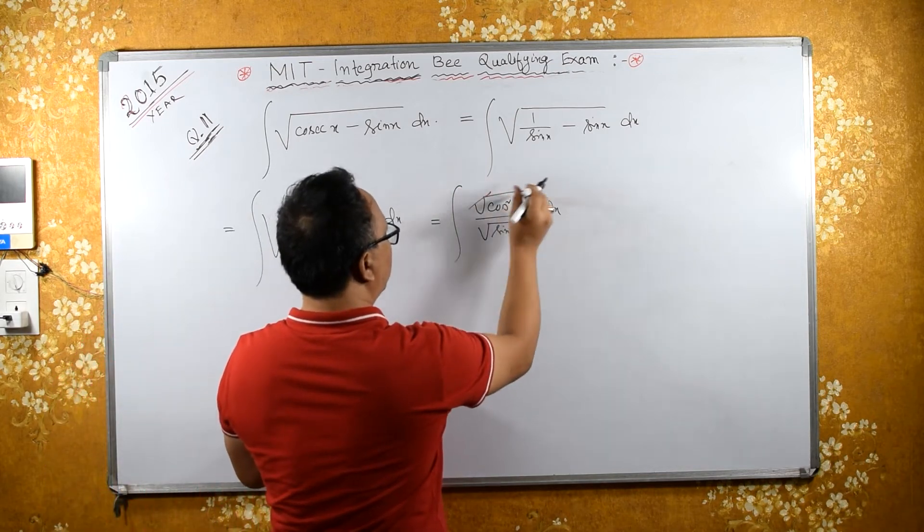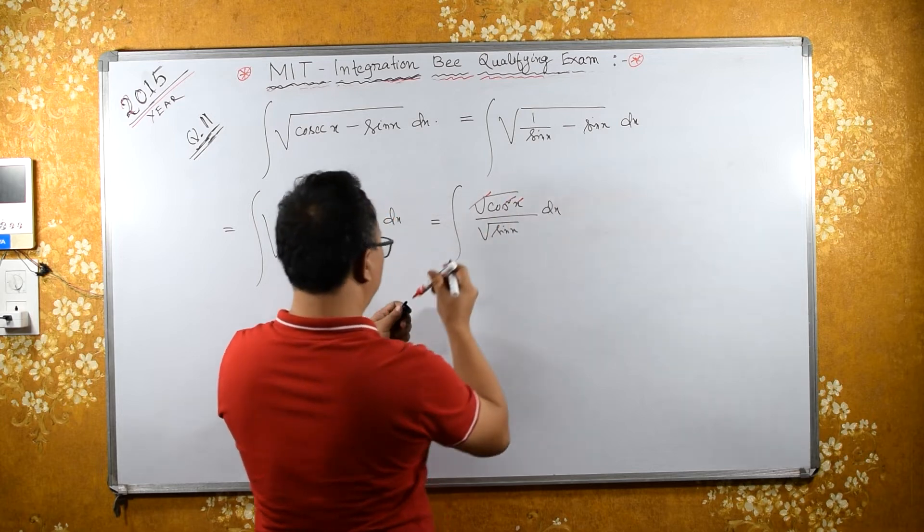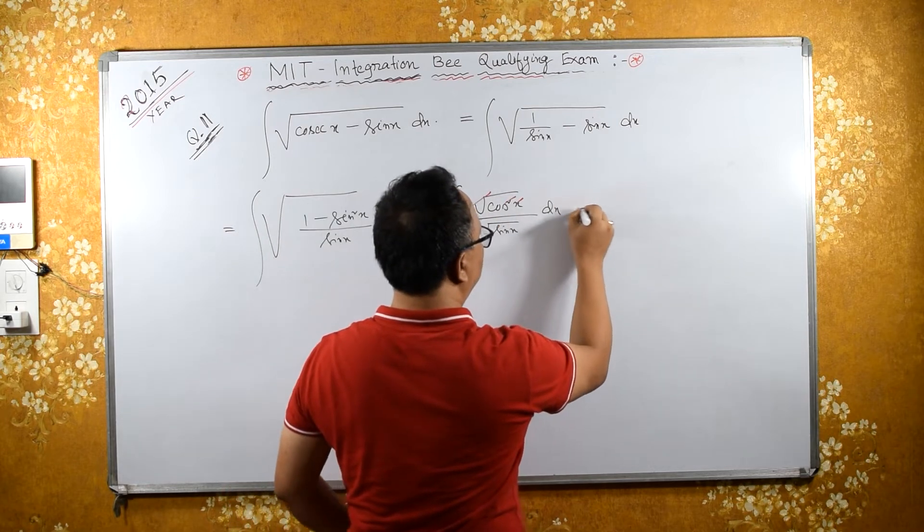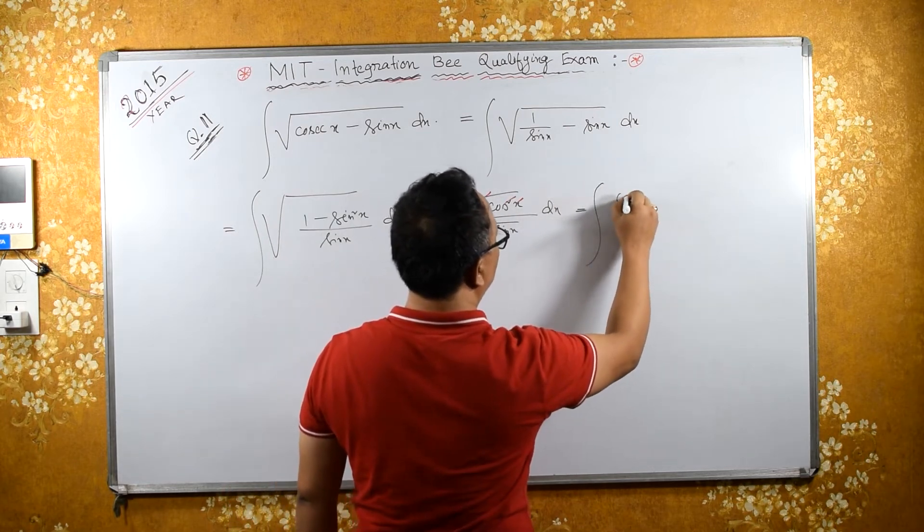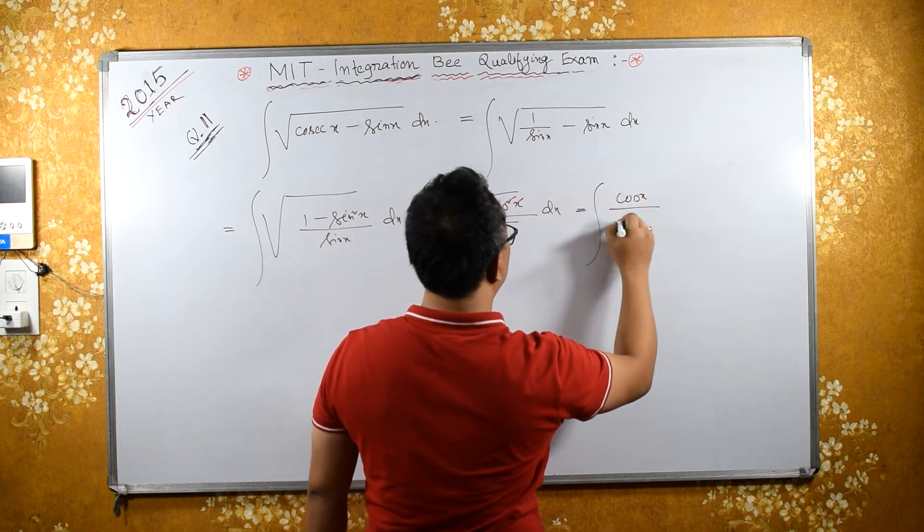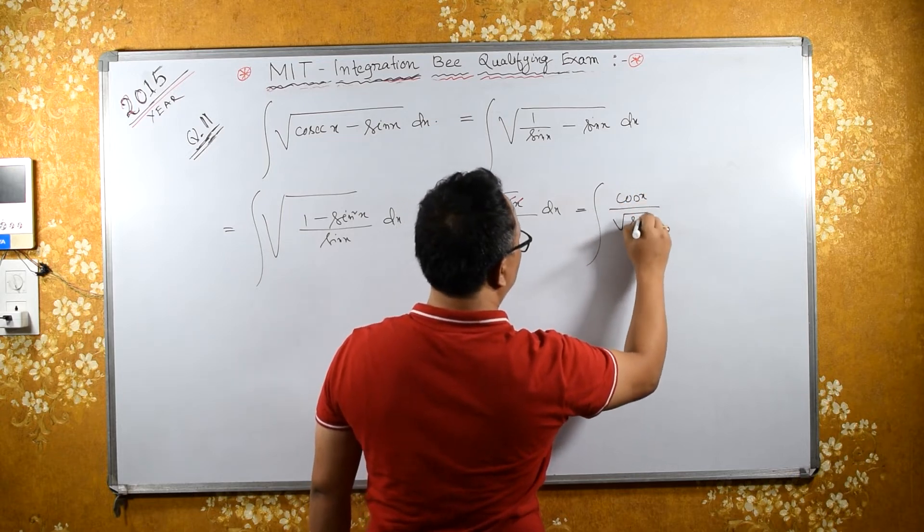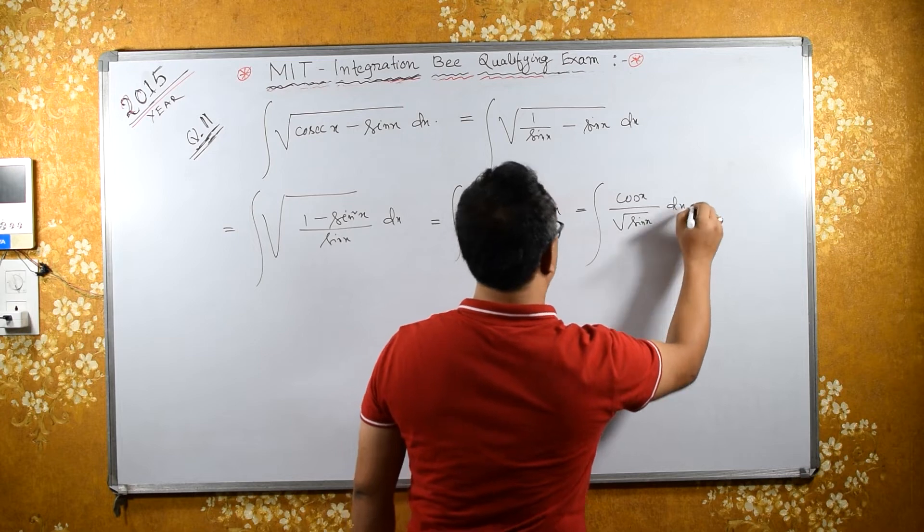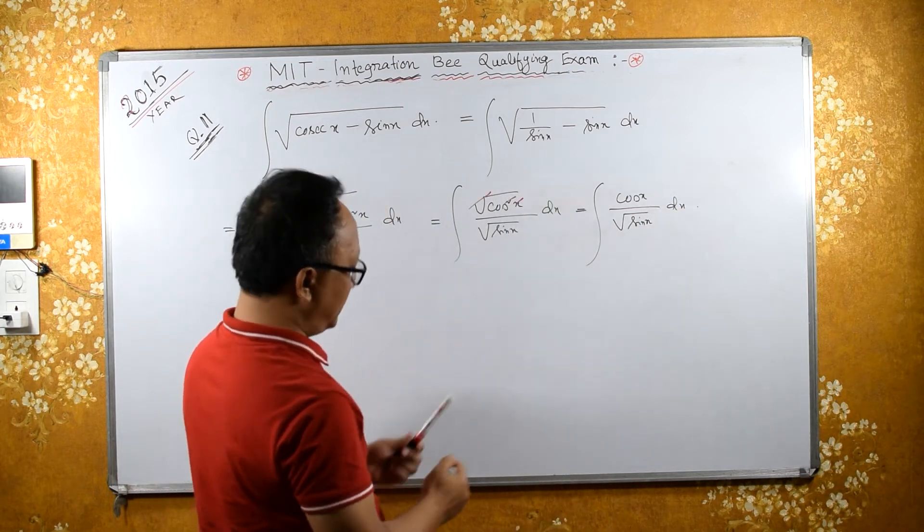Now square root and square gets cancelled. What we have is integral of cos x upon square root of sin x dx. In this integral,